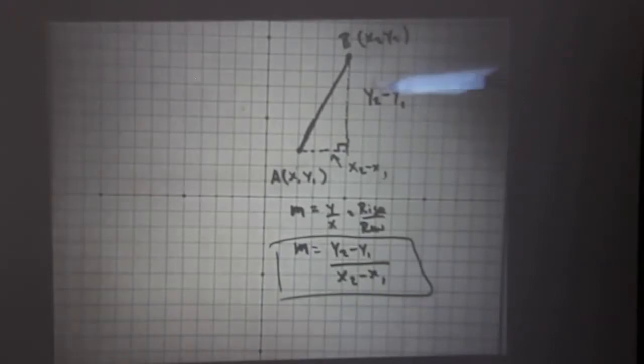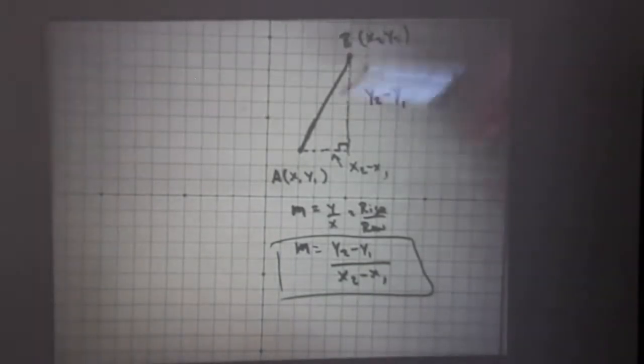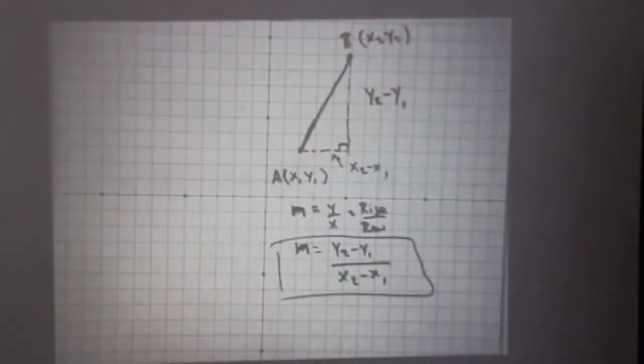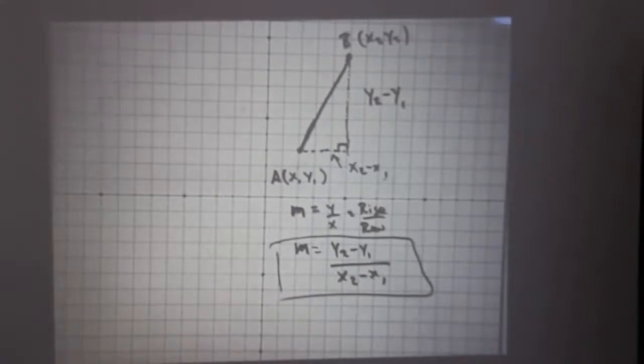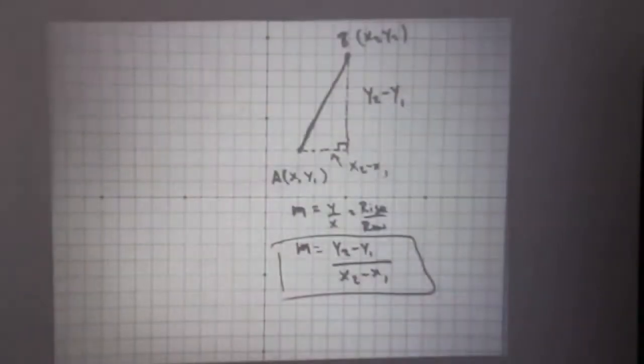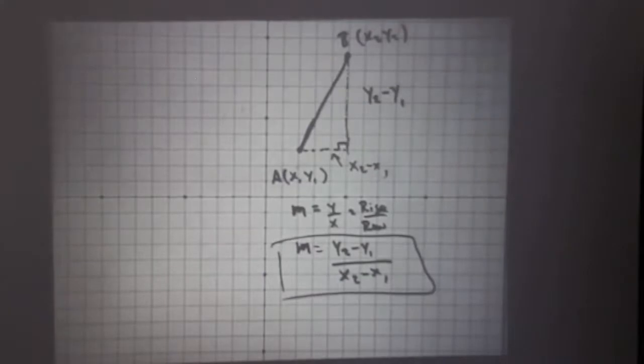That you can have any two points in space. It doesn't matter where they are, I happen to draw them in the first quadrant just for the sake of ease. But you can draw them anywhere. You have an x1, y1, you have an x2, y2.